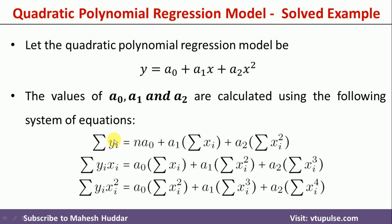What we need to calculate: summation of y, summation of xi, summation of xi squared, xi cubed, and xi raised to the 4th power. Along with that, we need the summation of y times x and the summation of y times x squared. First we calculate all these values and then put them into the equations, finally arriving at the values of a0, a1, and a2.